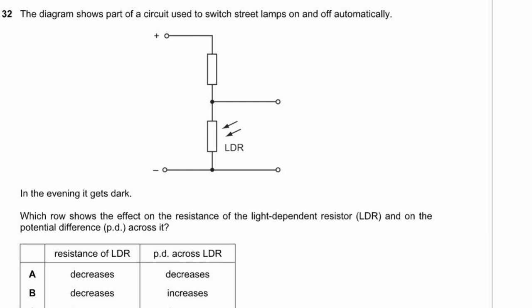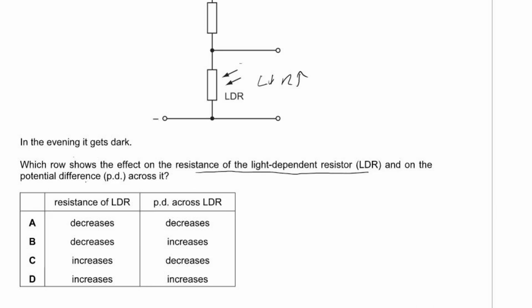Question 32. An LDR circuit switches street lamps on at night. As it gets dark, the resistance of the LDR increases. Using the potential divider formula, voltage across R₁ = R₁/(R₁+R₂) × supply voltage — as R₁ increases, the voltage across it also increases. So resistance increases and potential difference across the LDR increases. Answer D.